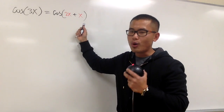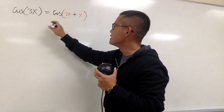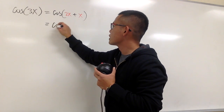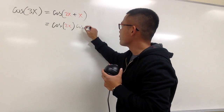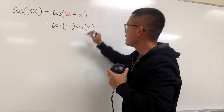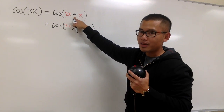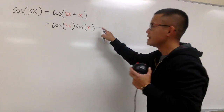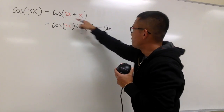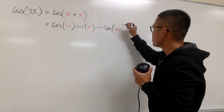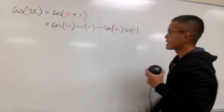Once we have this form, we can go ahead and use the angle sum formula for cosine. It will be cosine of the first angle, which is 2x, times cosine of the second, which is x. And then it will be a minus in between — even though this is the angle sum formula, for the cosine situation it's a minus — minus sine of the first, which is 2x, multiplied by sine of the second, which is x.